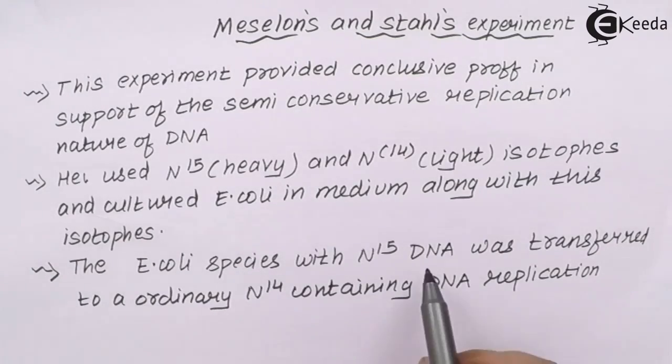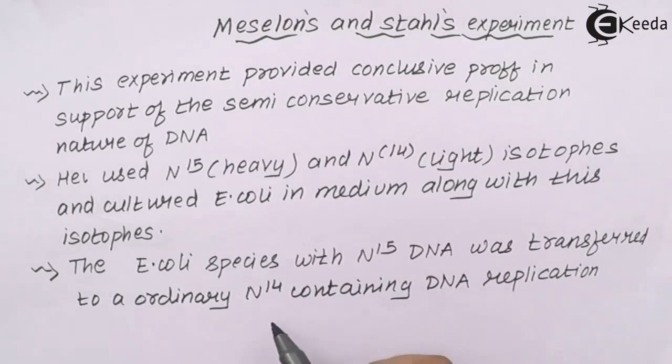The E. coli species with N15 DNA isotope were transferred or were kept in ordinary N14 containing DNA replication isotope species.